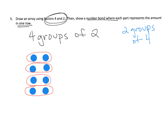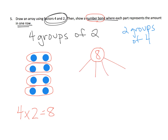I'm going to write four times two is equal to eight. It does ask us to write a number bond, so I'll put my eight as the total. Because I have four groups of two, my number bond is going to show four groups of two. And that wraps up this problem.